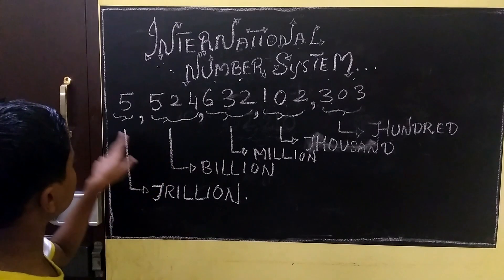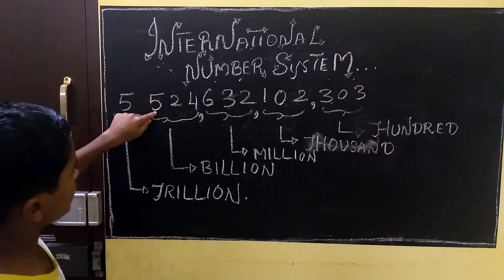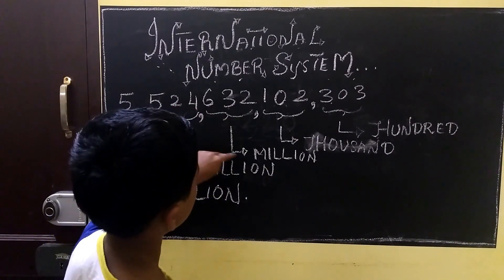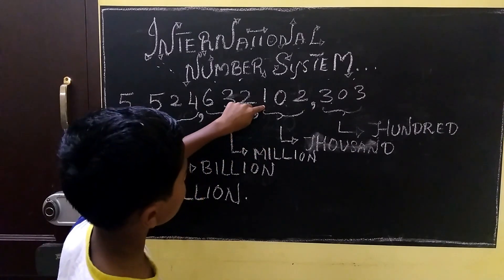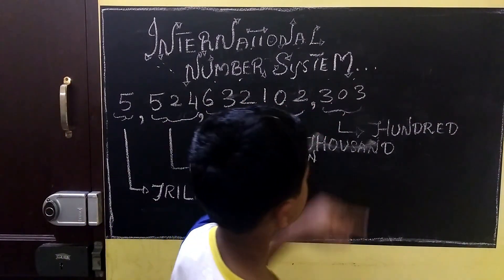Now, we are going to read this number. This is 5 trillion, 524 billion, 632 million, 102 thousand and 303.